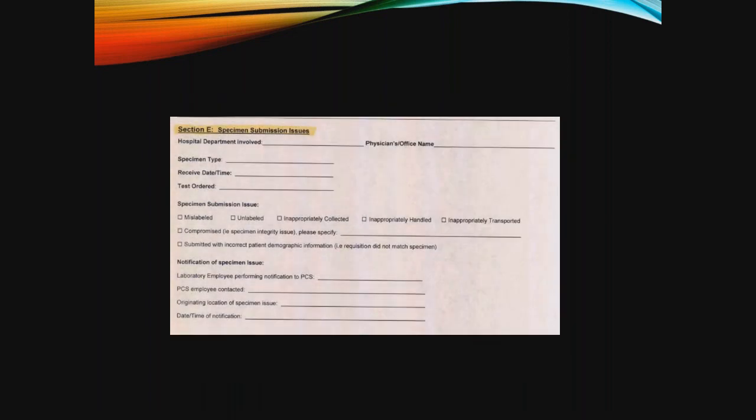Section E is what we put on either the back or a second page — it's really more for specimen submission issues. We separate it so that if it's only a specimen submission issue, the staff will only fill out this particular part of the form, since the items in the first four sections don't really apply when documenting a specimen submission issue.